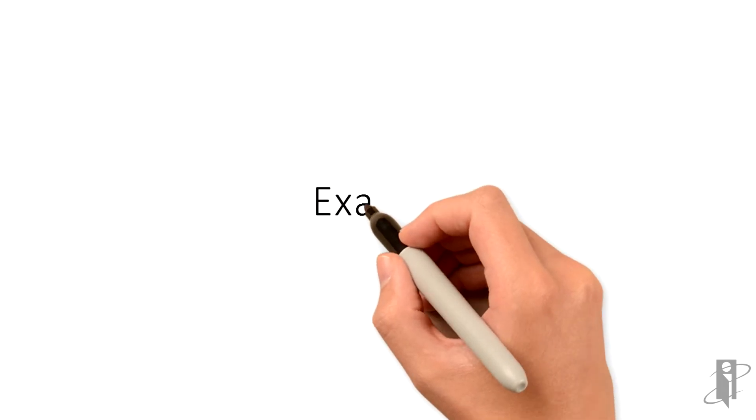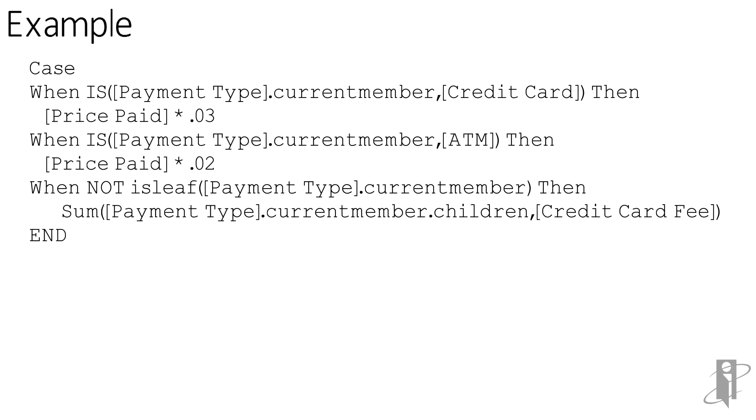Let's take a look at an example with the case statement. In this case I'm using the second format. It's saying case when is payment type credit card, then we're going to take the price paid and multiply it by 0.03. Our rates have gone up. When it's the payment type of ATM we're getting charged a fee for that, so it's a lesser fee, two cents on the dollar. So price paid times two cents.